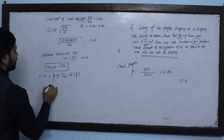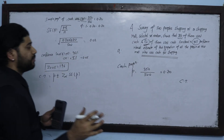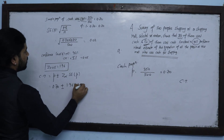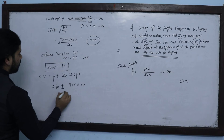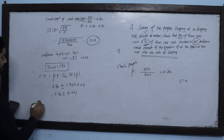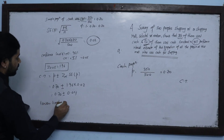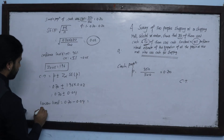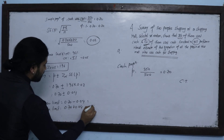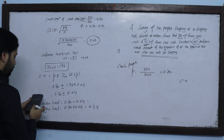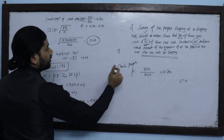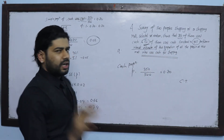The confidence interval is: sample proportion plus or minus z-alpha times the standard error. So it is 0.70 plus or minus 1.96 times 0.02, which equals 0.70 plus or minus 0.04. The upper limit is 0.70 plus 0.04 = 0.74, and the lower limit is 0.70 minus 0.04 = 0.66. This gives the 95% confidence interval for the proportion of all persons at the shopping mall.